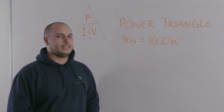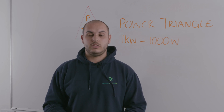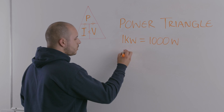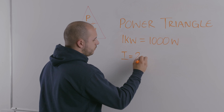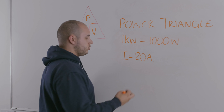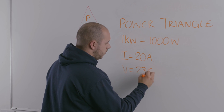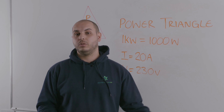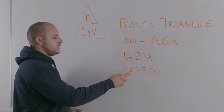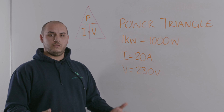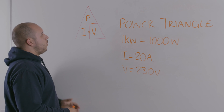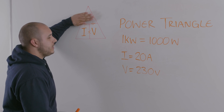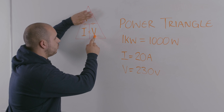Now we're going to look at a different combination. This may come in if you were to check a circuit with a clamp meter or something like that, and you were to measure the current going through that circuit. Say you had a current of 20 amps on a 230 volt circuit, so the voltage was 230 volts. We have those two values, but we want to know the power requirements for the appliance attached to that circuit.